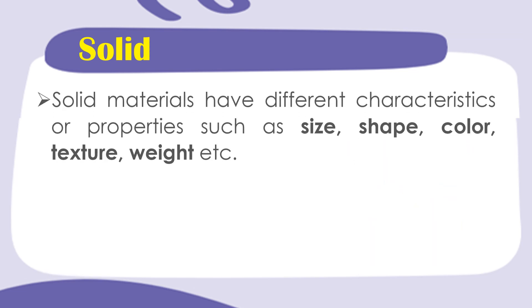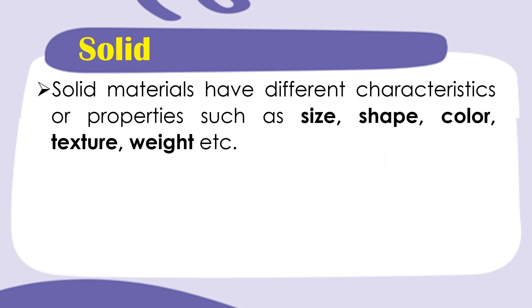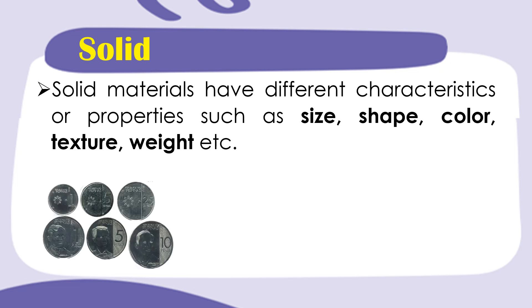Solid materials have different characteristics or properties such as size, shape, color, texture, weight, etc. For example, in these coins, they have different sizes but the same shape, which is circle.